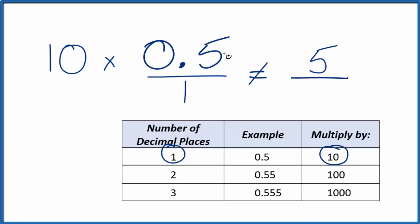But 5, that's not equal to 0.5. We need to multiply the bottom here by 10 as well. And if you think about it, 10 over 10 right here, that's just 1. So we're only multiplying by 1. We're not changing the value, just the way it's expressed.